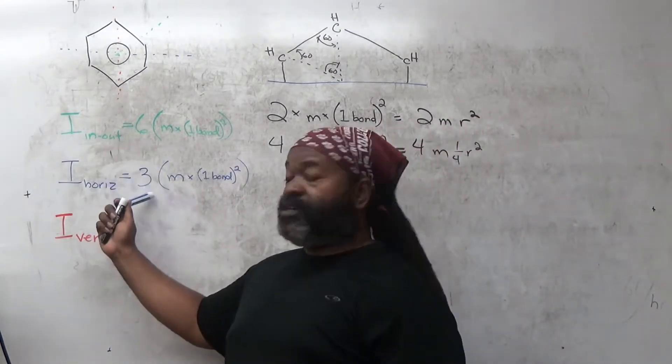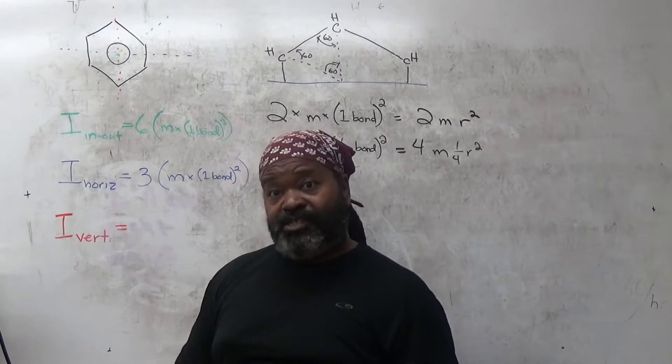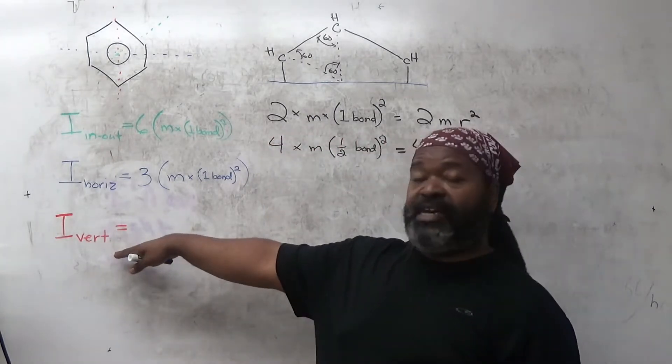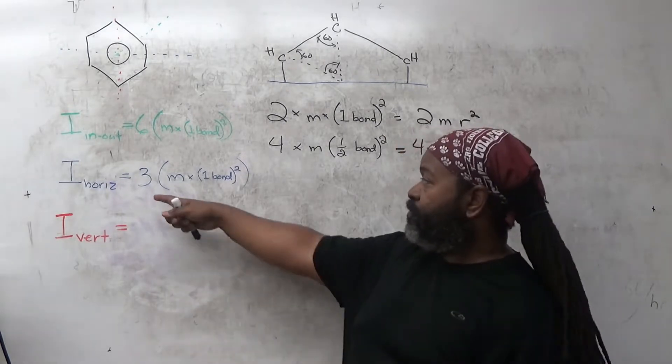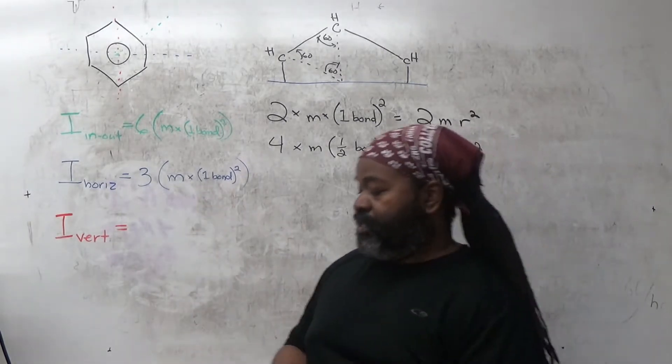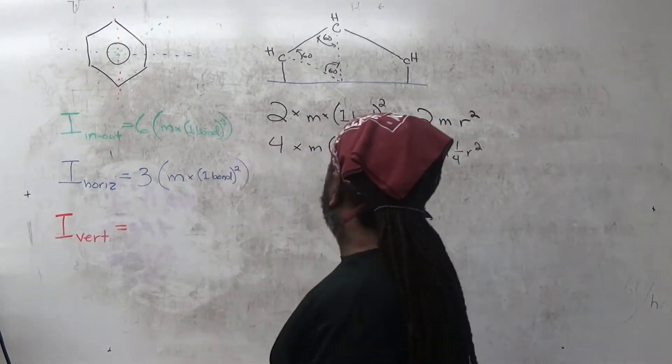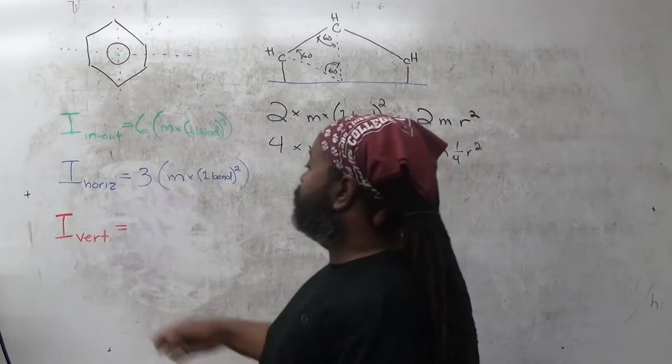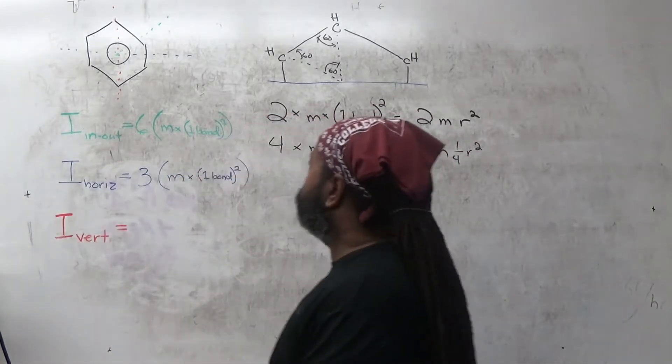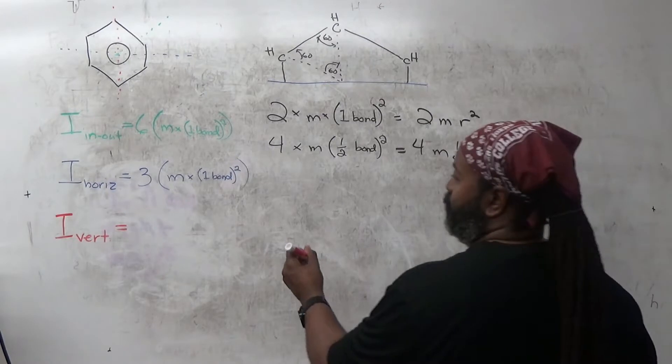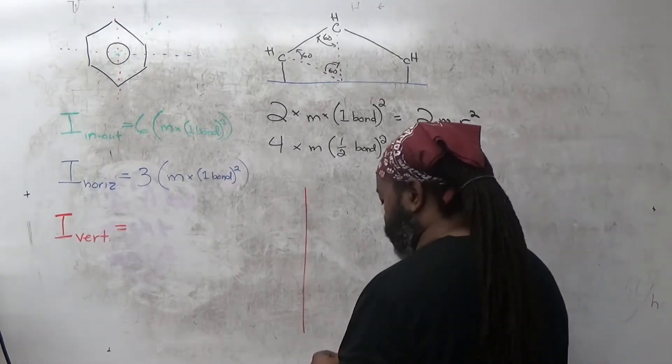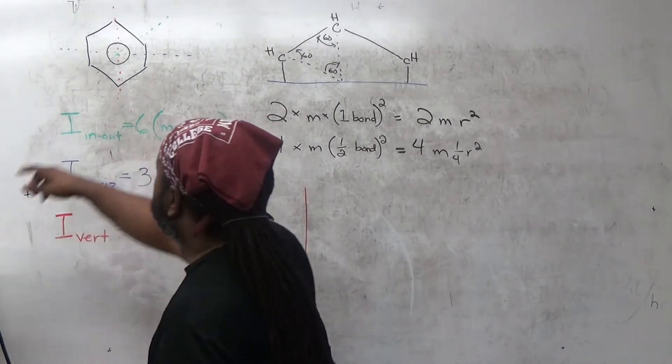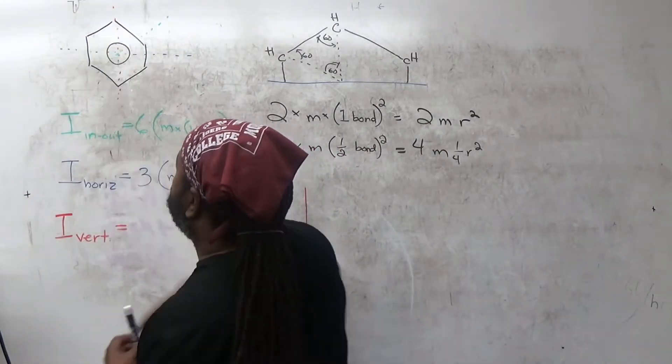So this one is still bigger than this one. So the last thing I would need to do is show that for this vertical axis, we're able to demonstrate that we're still going to get 3 times mr squared. So let's do that. I can draw the vertical axis here. And in this case,